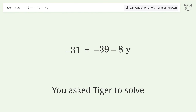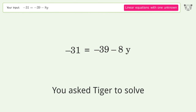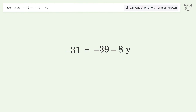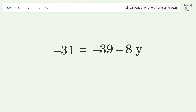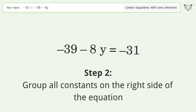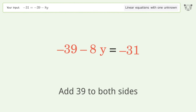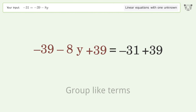Tiger is asked to solve a linear equation with one unknown. The final result is y equals negative one. Let's solve it step by step: swap sides, group all constants on the right side of the equation, add 39 to both sides, and group like terms.